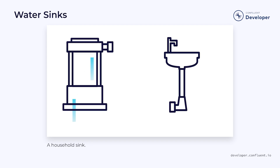Let's go back to our plumbing analogy. The other key thing we need is a destination for our water. This is typically going to be something like a shower or a sink in a building somewhere. When we turn on the faucet, water will flow out and collect in the sink.